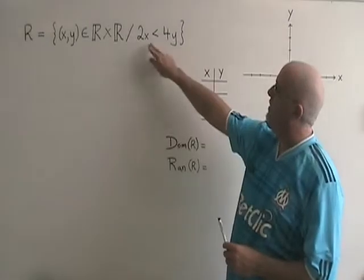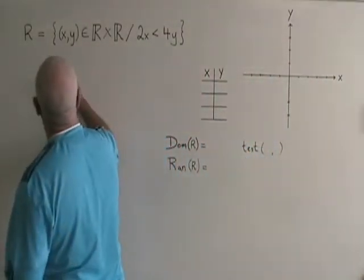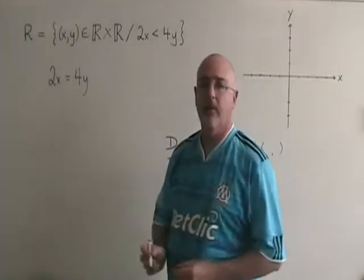The first thing I do is write the inequality as an equality, 2x equals 4y.